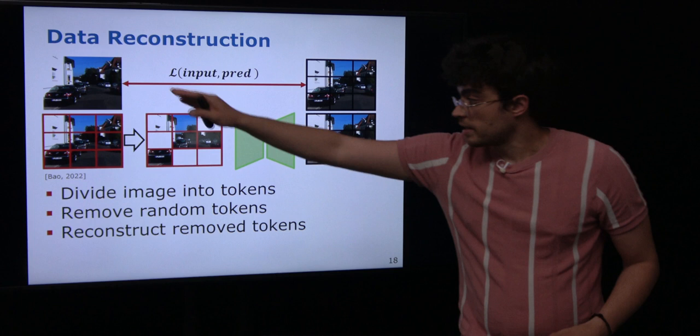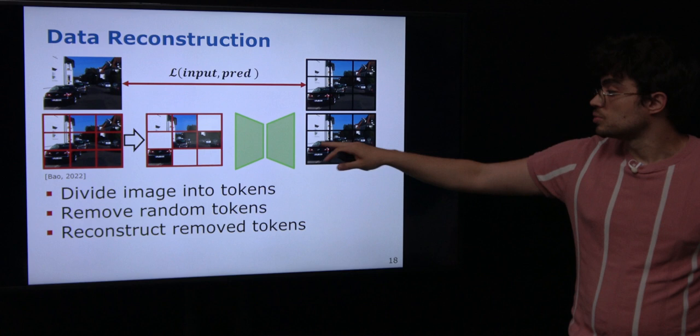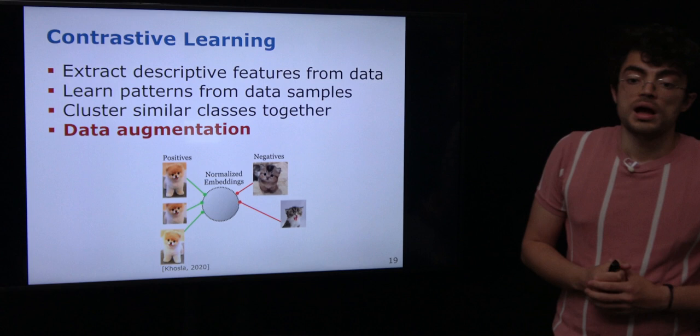Another possibility is to divide the image into tokens but instead of shuffling, we simply mask out some of those tokens. The task of the network is to reconstruct the original image — to reconstruct those missing tokens. Again, we can directly supervise this because we know the original image, and we can use this as a pretext task.